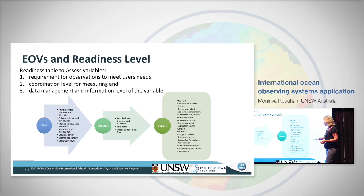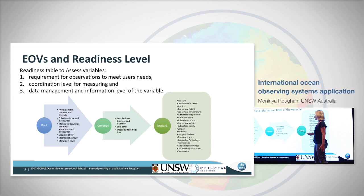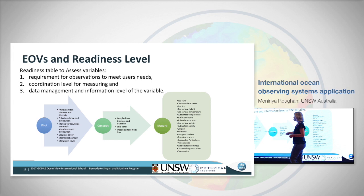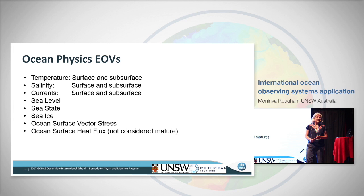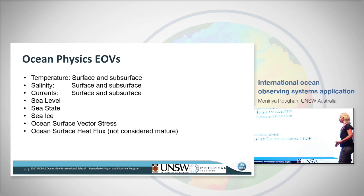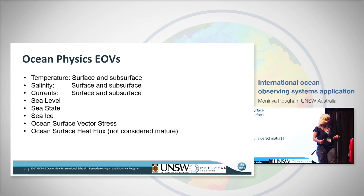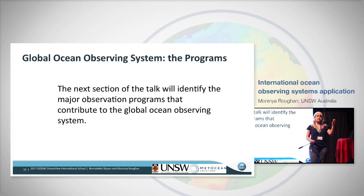Also in the mature category are some biogeochemical observations: nutrients, inorganic carbon, nitrous oxide, etc. In the concept phase are sustained observations of zooplankton biomass and diversity, coral, and ocean surface heat flux. In the pilot phase are things like tracking of marine mammals, birds, and turtles — their abundance and distribution. For the rest of this talk we'll focus on essential ocean variables in the physics space: temperature, salinity, currents (surface and subsurface), sea level, sea state, sea ice, ocean surface vector stress, and ocean surface heat flux.